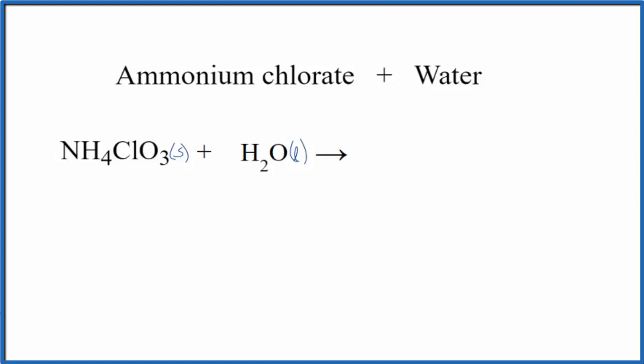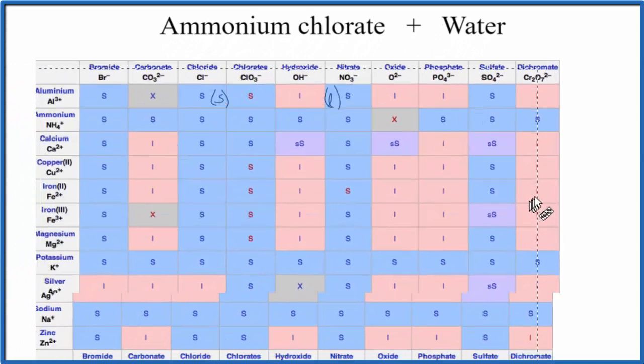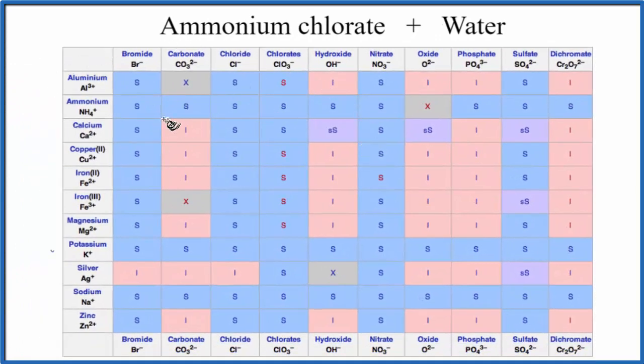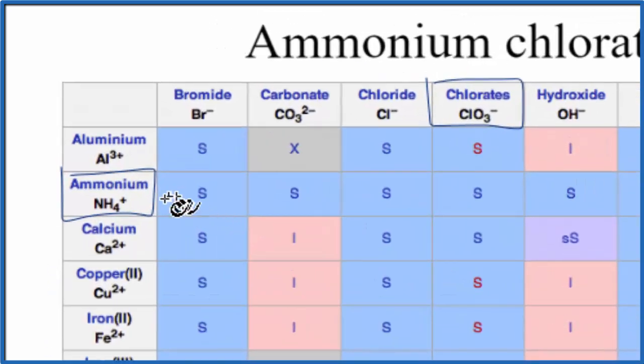We could also look at a solubility chart to see if that's the case. On our solubility chart, we find the ammonium ion right here. That's NH4 plus and then chlorate, ClO3 minus. We go over and we go down. And you can see that S there.